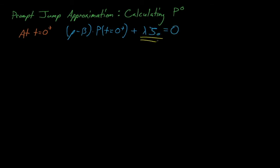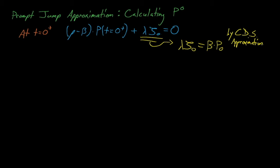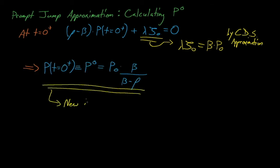From here, we can apply the constant delayed source approximation to assume that our one-group lambda squiggle is equal to beta times p0, where this is the p0 from before the transient began, and not the adjusted p0. With this, we can solve for the prompt jump approximation's adjusted initial power, which is equal to the pre-transient power times beta divided by beta minus rho.